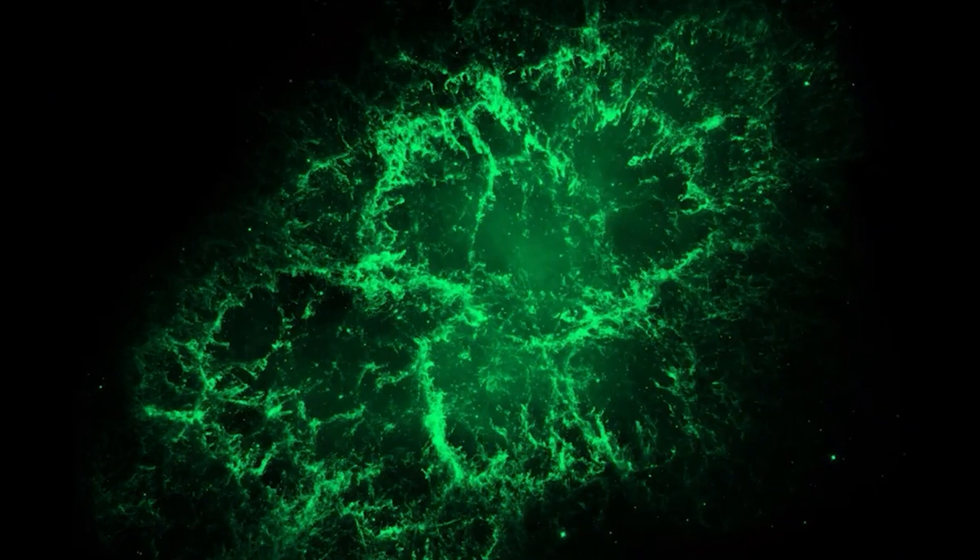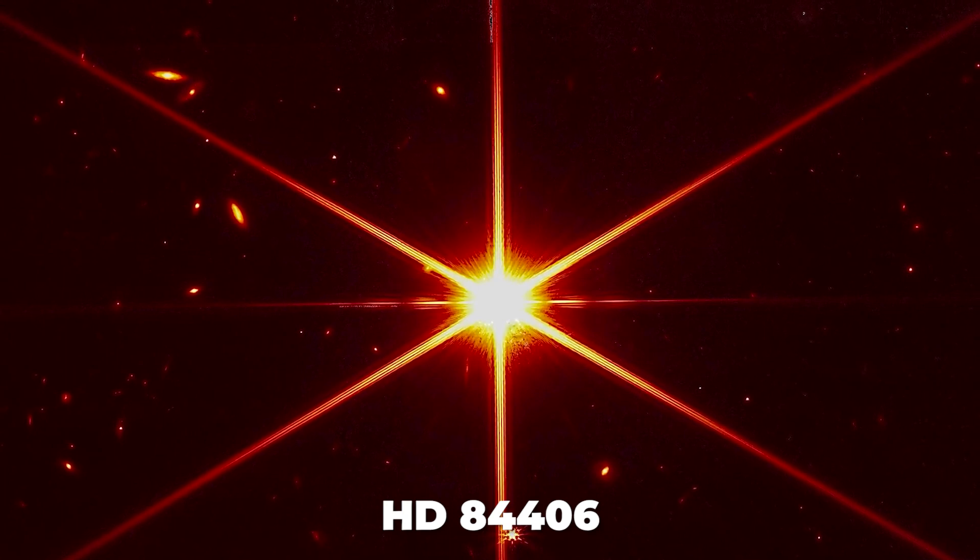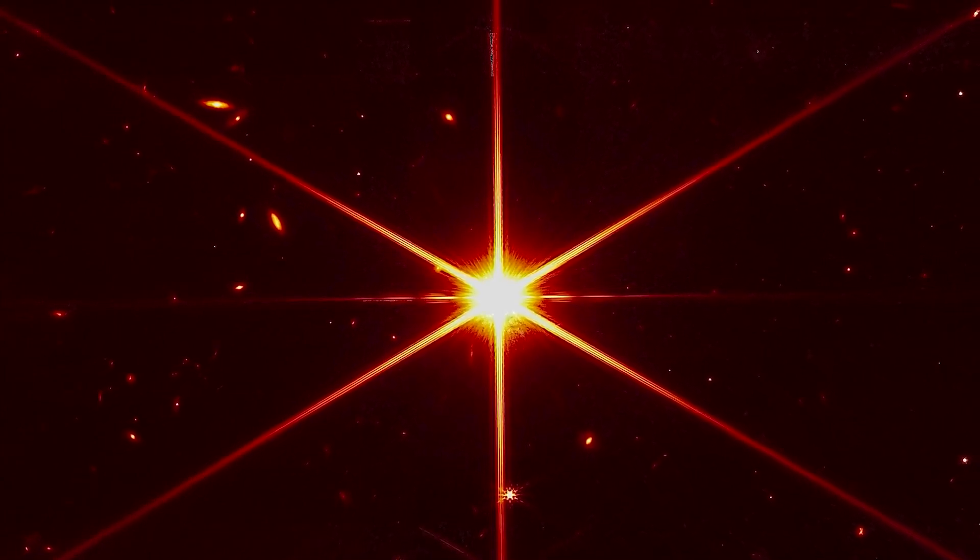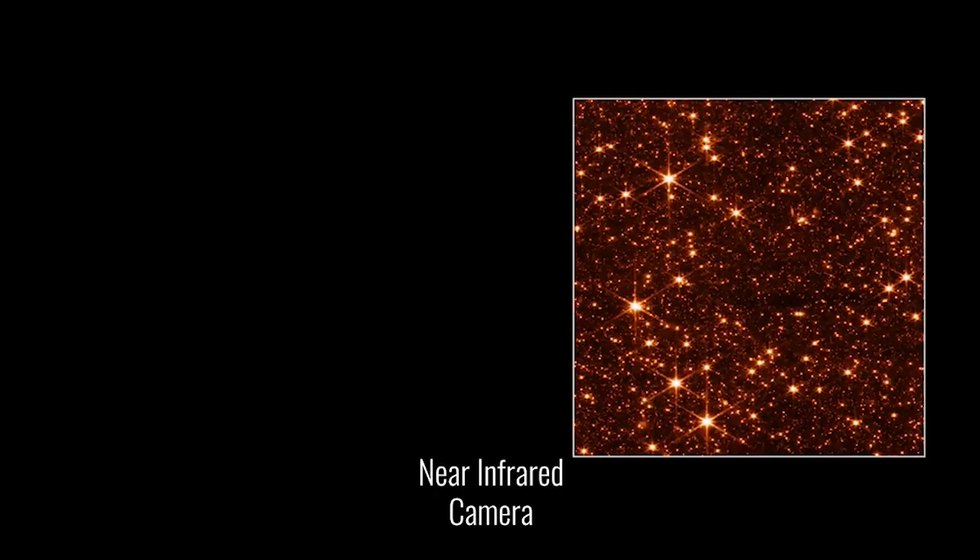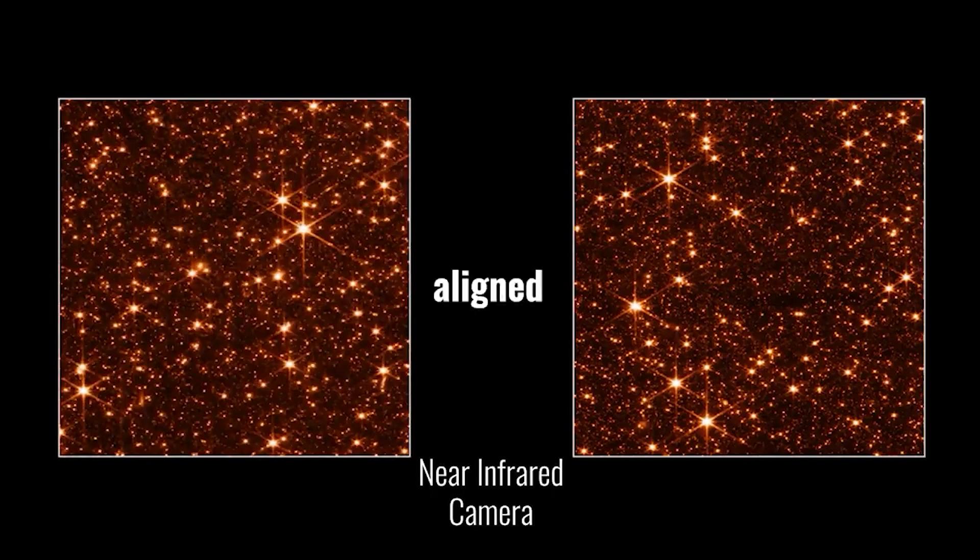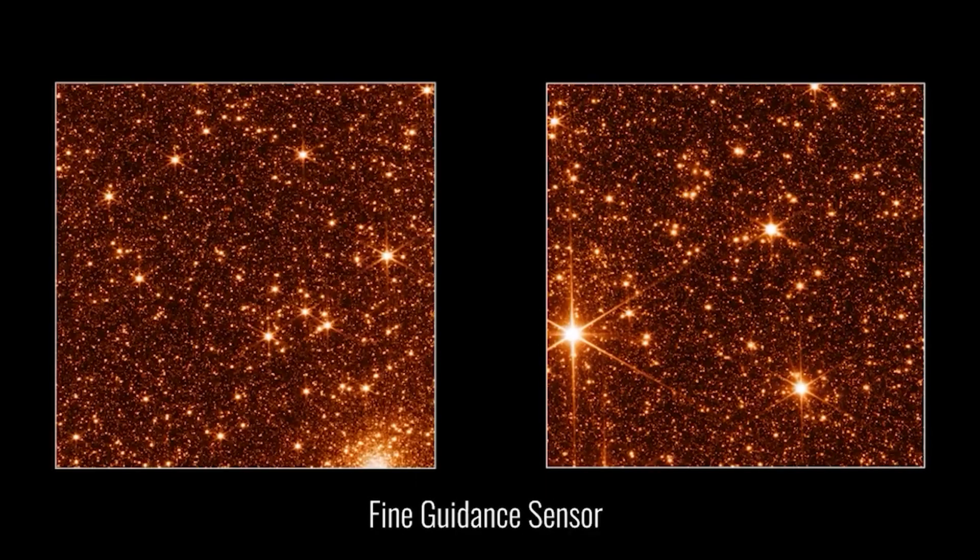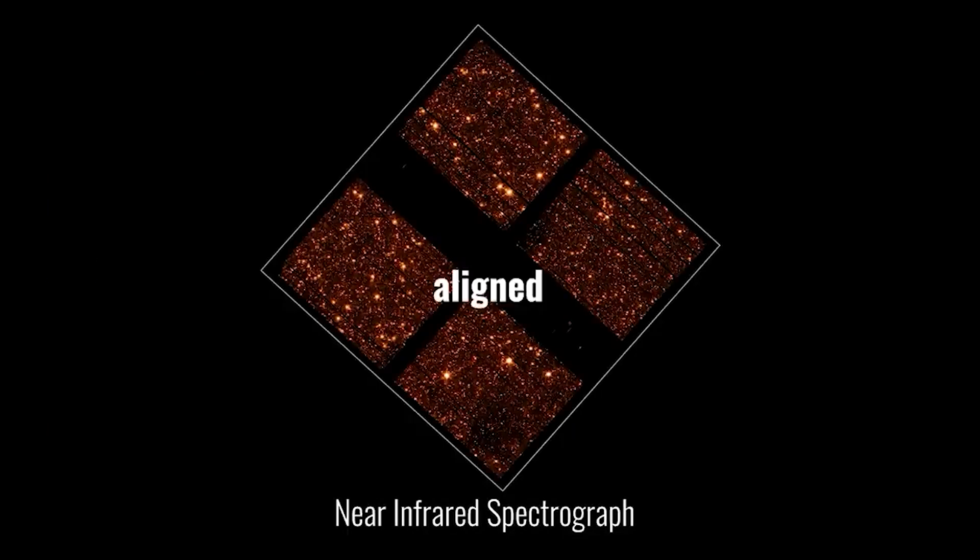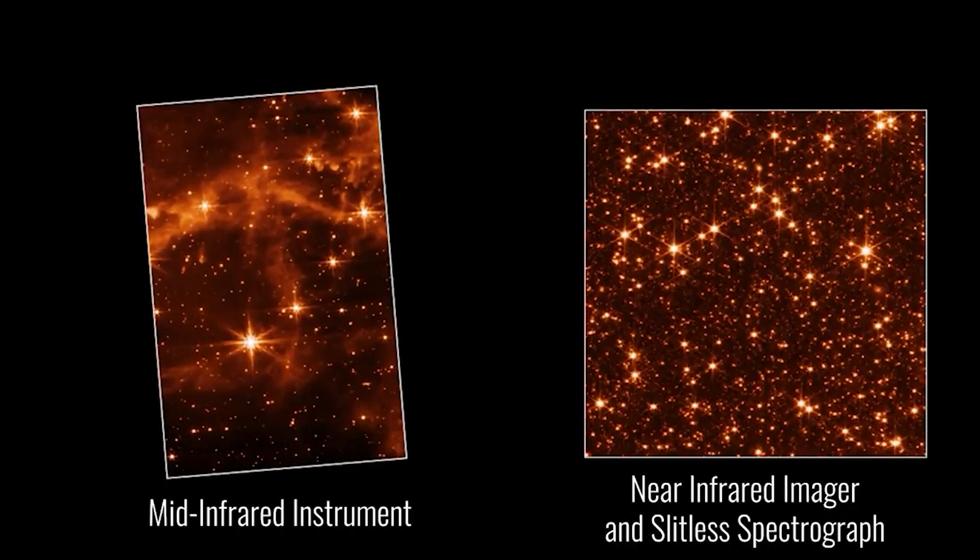The very first images from the James Webb Telescope are from a star known as HD 84406, and it is at least 100 times fainter than what can be seen with the human eye. What makes this image so special is the fact that each spray of tiny dots scattered across the background is a distant galaxy, and this is the first time we have been able to capture them. These images were never meant to be scientific, as these are engineering images designed to test how well the telescope works, because this $10 billion telescope is extremely complex in its design.